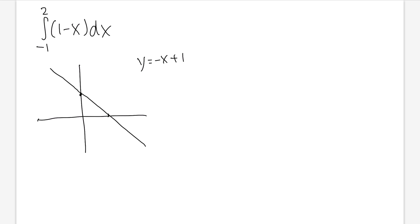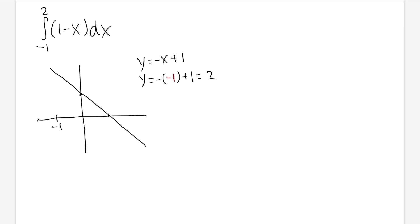More importantly, we care about when x is negative 1 up to x equals 2. If x is negative 1, plugging in gives y equals negative negative 1 plus 1, that's 1 plus 1 which is 2. So when x is negative 1, the y value is 2. Then plugging 2 into the function, we have negative 2 plus 1, that's negative 1. So x = 2 gives y = negative 1.